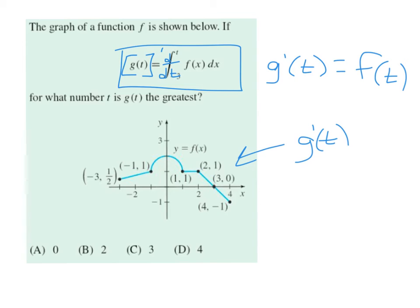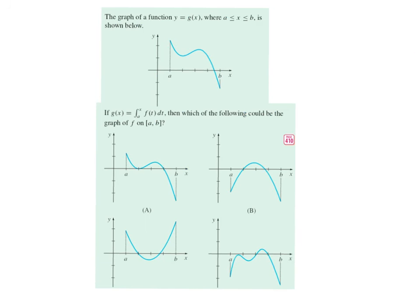Okay. So if this is g prime, at what number t is g the greatest? So what's that asking? Maximum. Greatest, that's a max. So if this is g prime, where's the max? It's at three. Why? Because the graph of the derivative, g prime, is going from positive to negative. That's it. So recognizing that they're naming a function based on an integral gives us that fact that if I take the derivative, this is really the graph of the derivative.